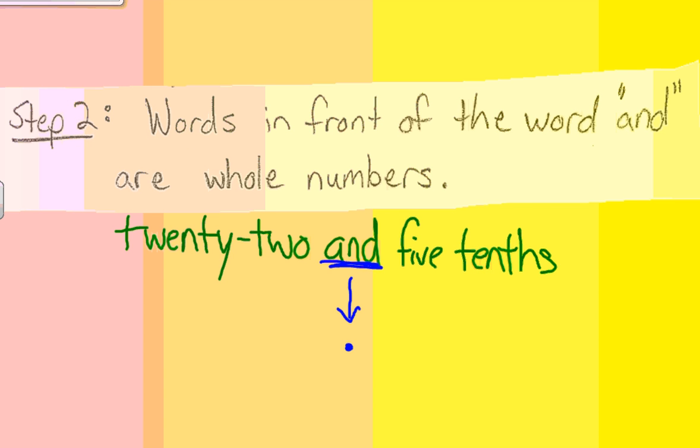Step number two. The words in front of the word AND are whole numbers, so if I look at these words in front of the word AND, they should be my whole numbers. Twenty-two. That means two tens and two ones. Twenty-two.